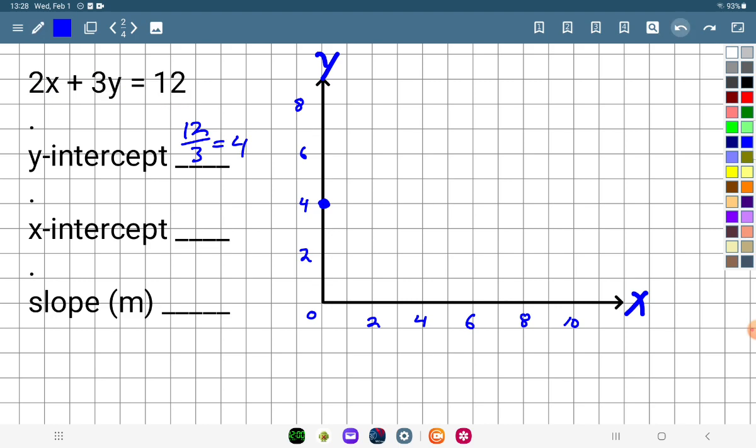So in essence, what we're doing is removing this 2 under the 12. So 12 over 2 equals 6. I'm going to mark this on my graph.